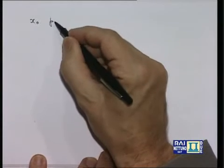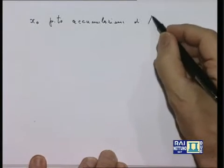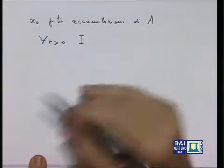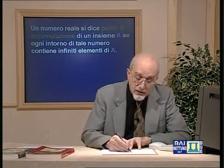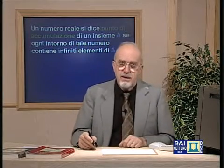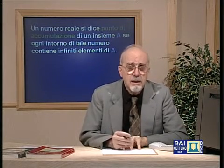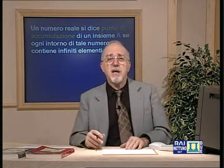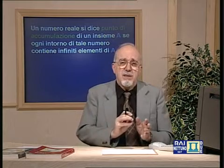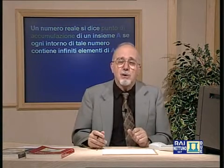Cosa vuol dire che x₀ è punto di accumulazione? Traduce l'idea che gli elementi di A si accumulano vicino a x₀. Vuol dire che comunque si prenda il raggio R positivo, l'intersezione tra l'intorno di centro x₀ e raggio R e l'insieme A deve contenere infiniti elementi. È abbastanza facile fare esempi: un insieme finito certamente non ha punti di accumulazione.